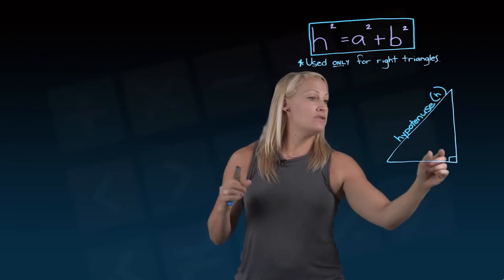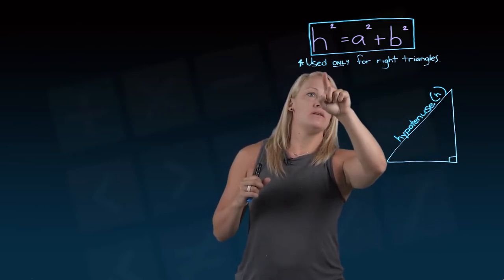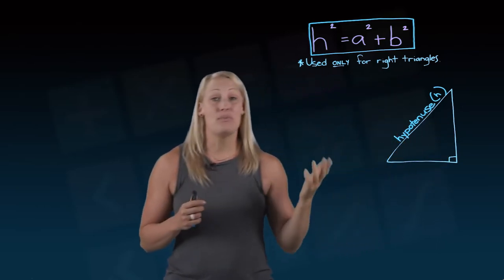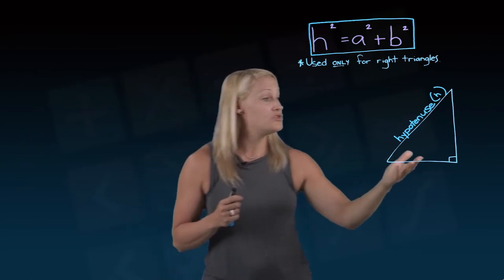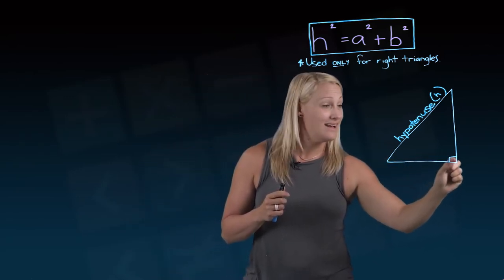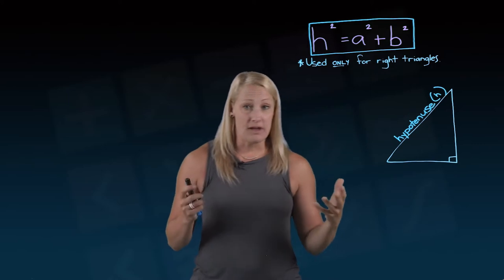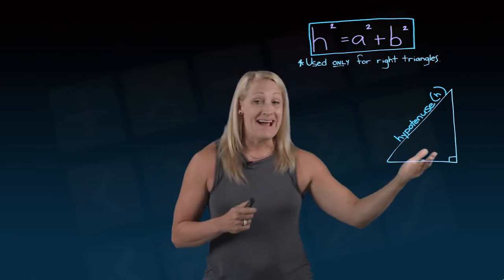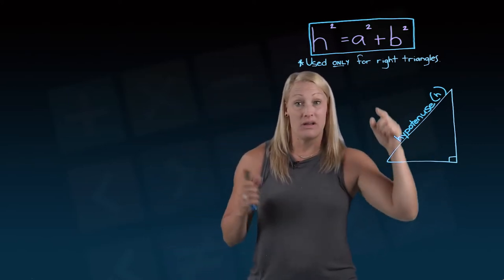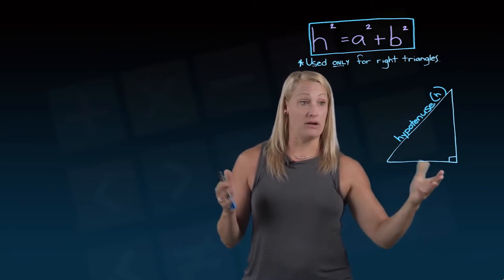And the hypotenuse is, if you see here I've written use only for right triangles, the Pythagorean theorem only works when you've got a triangle with a right angle in it. That little square implies a right angle, which hopefully you know means a 90 degree angle. This doesn't work if you don't have a 90 degree angle in your triangle.